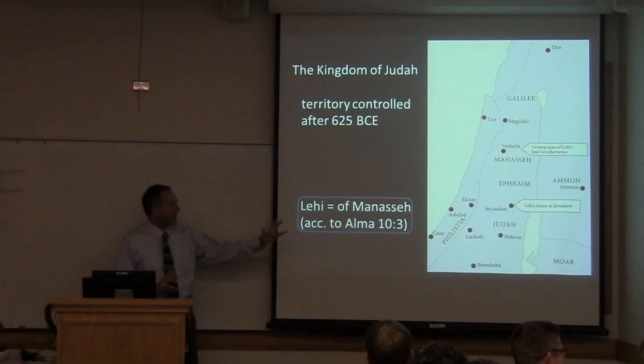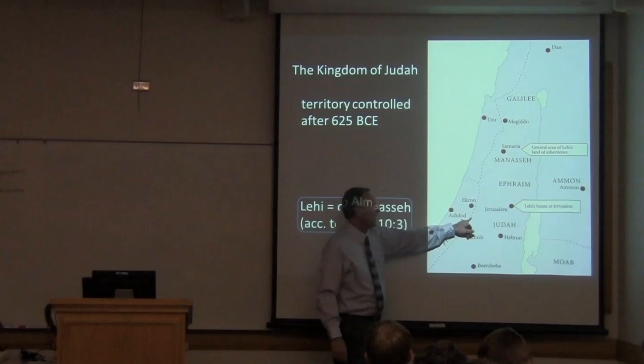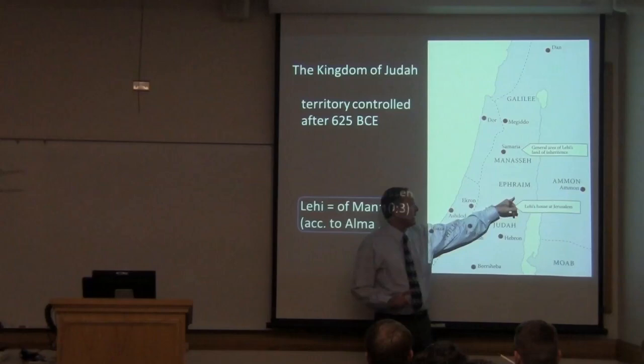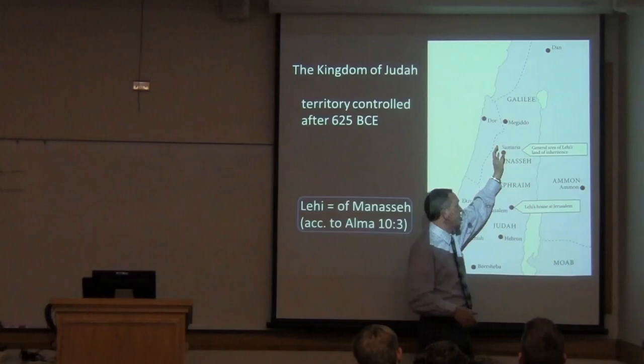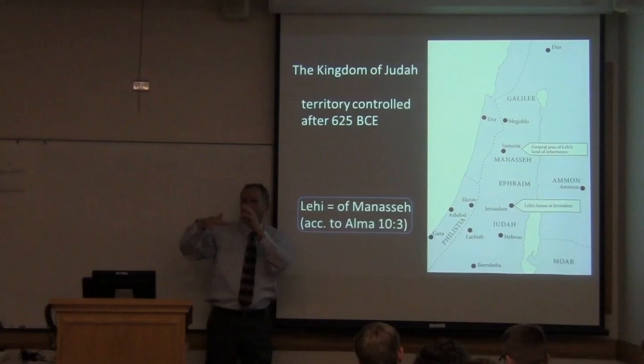Coming back to the map I flashed to you in the beginning — and this map actually appears in the reading that I sent you — here's where we would note Lehi's house at Jerusalem, and here, very likely for reasons you will read about, in the land of Manasseh, the tribal inheritance of Lehi would be the most likely spot. You'll read why western Manasseh rather than eastern Manasseh across the Jordan River. I'm only doing a preview of what you're going to read this week.